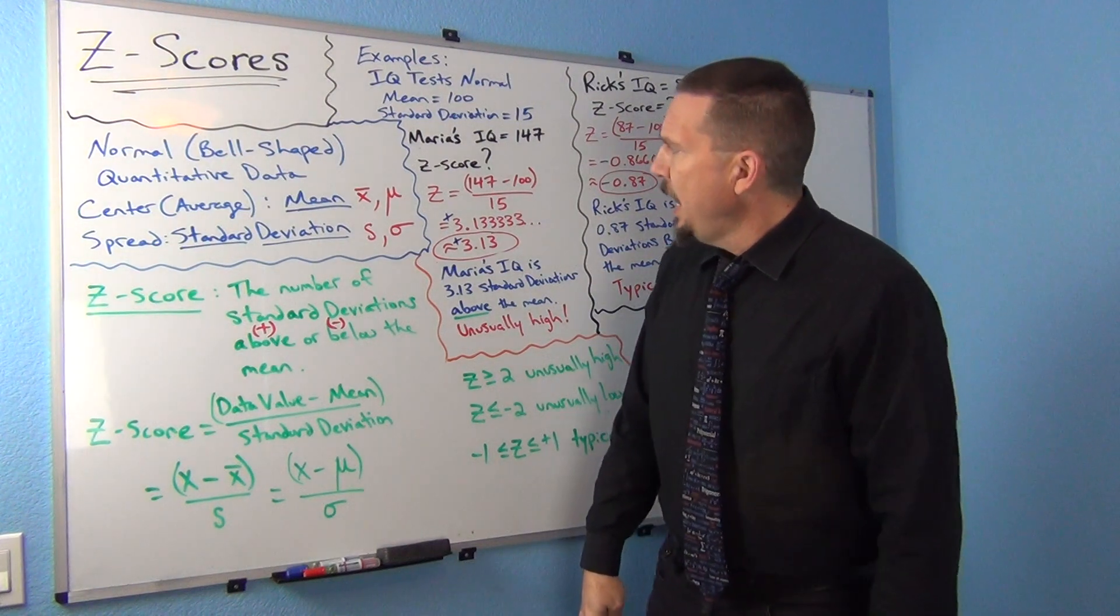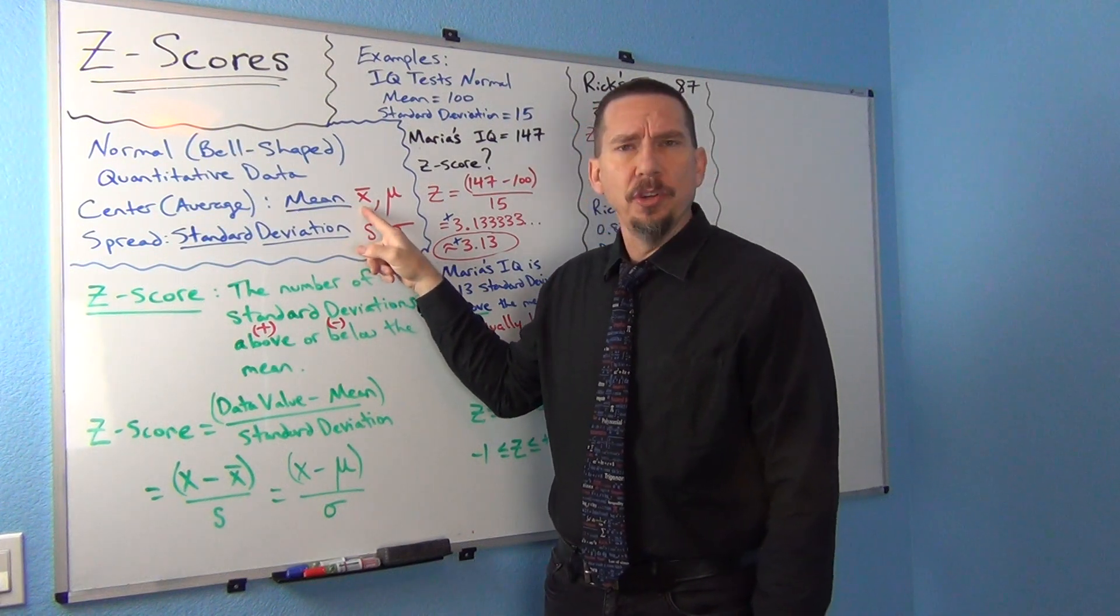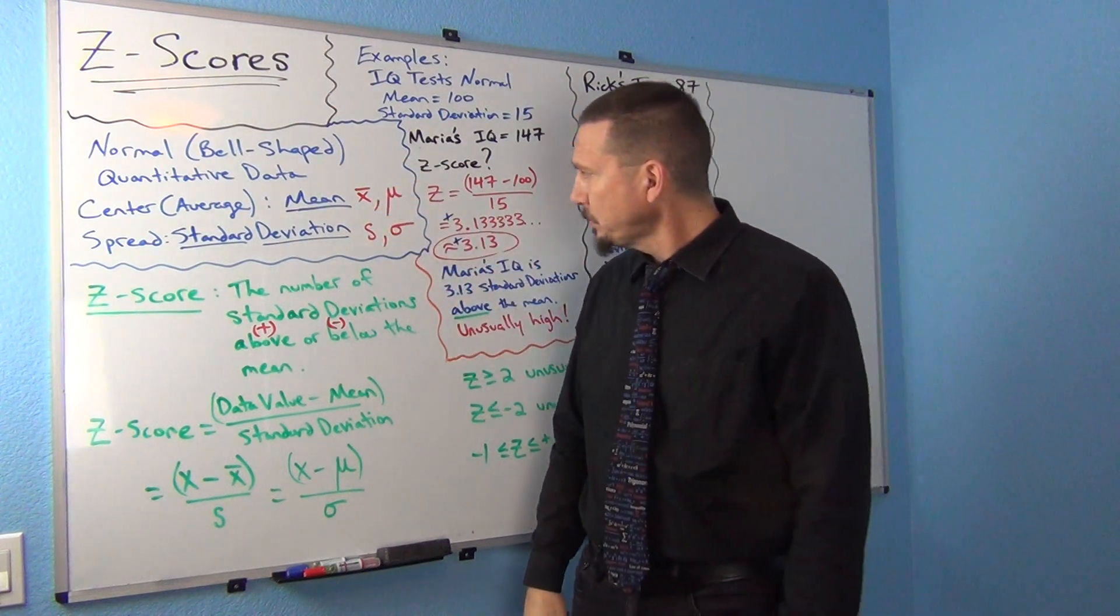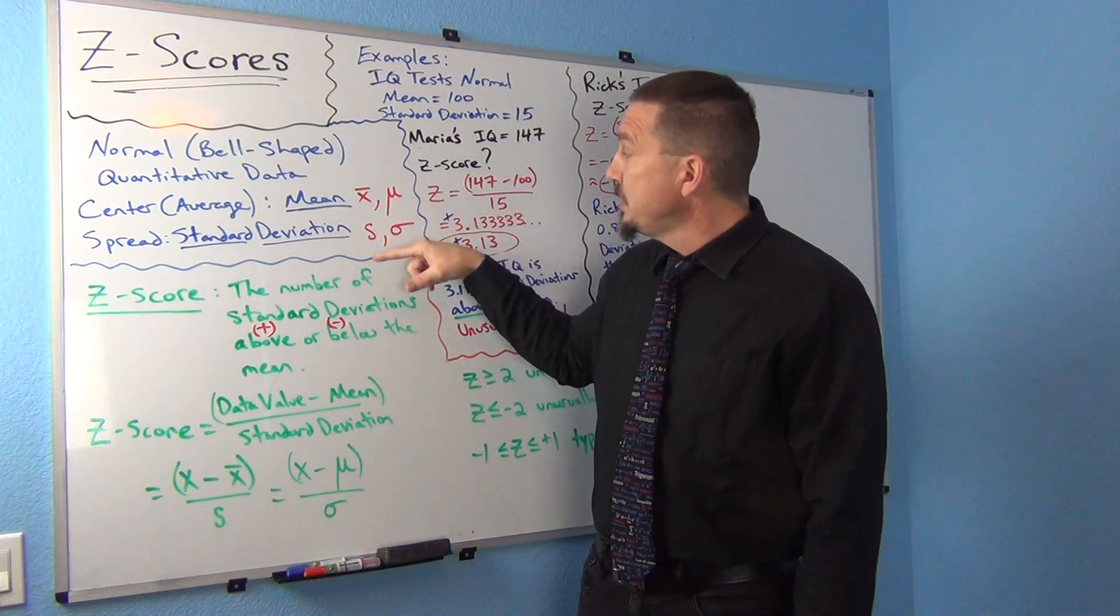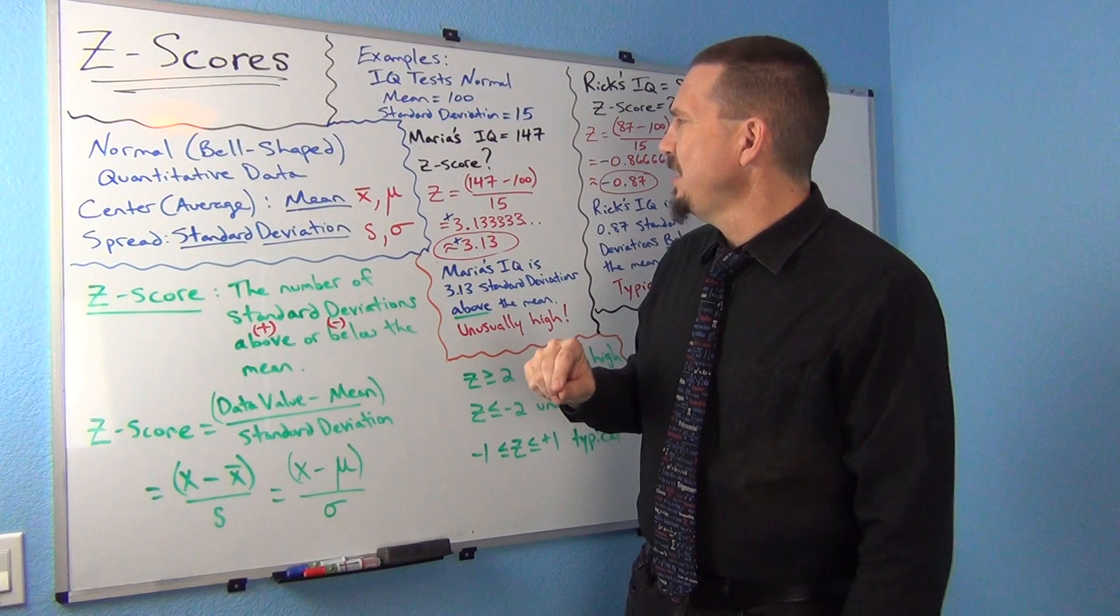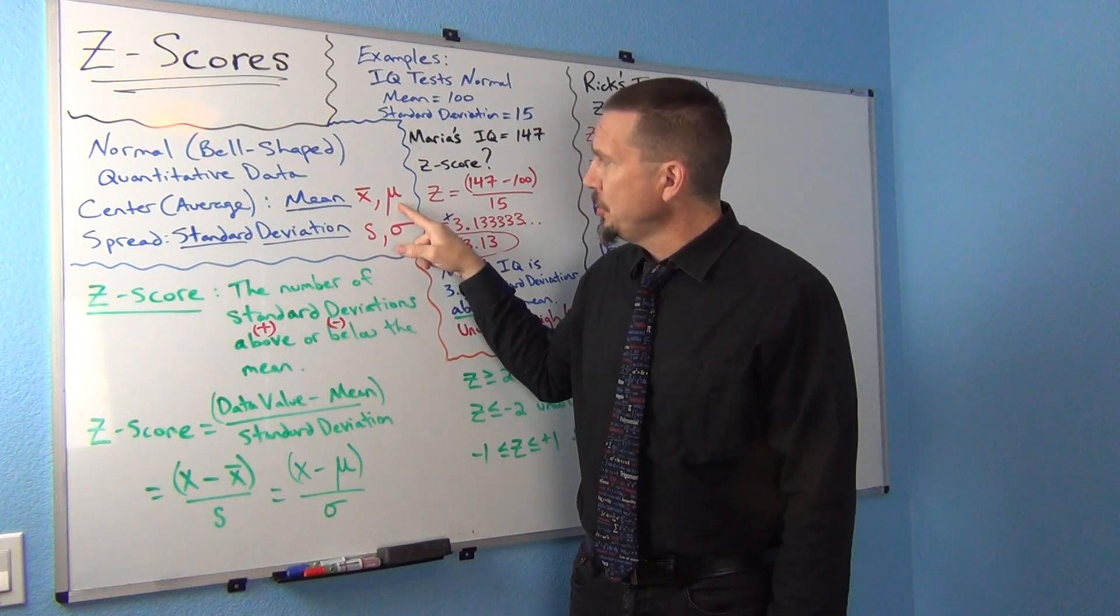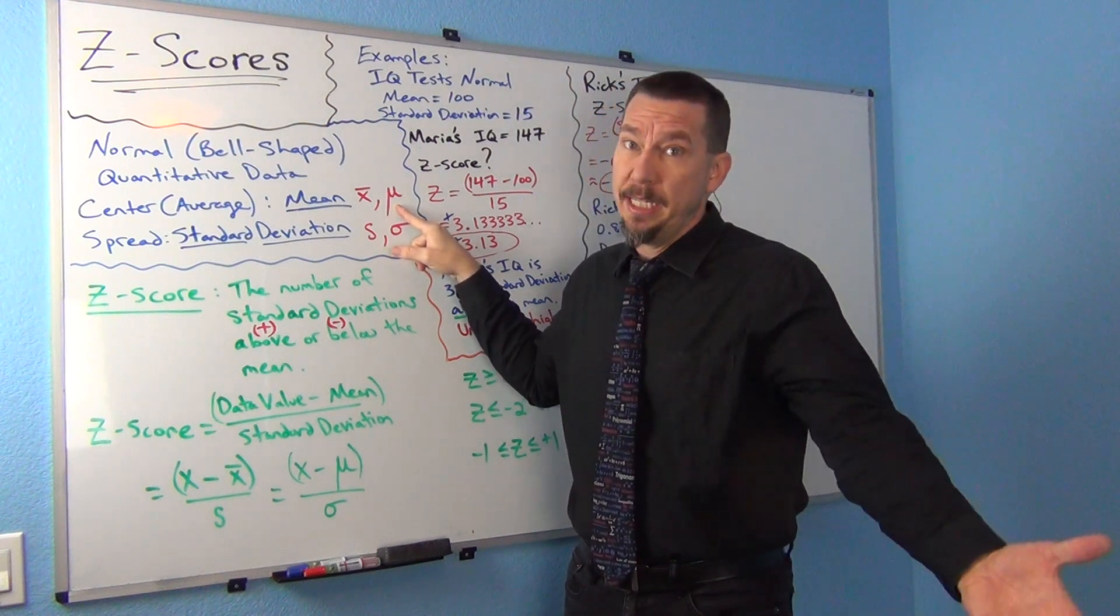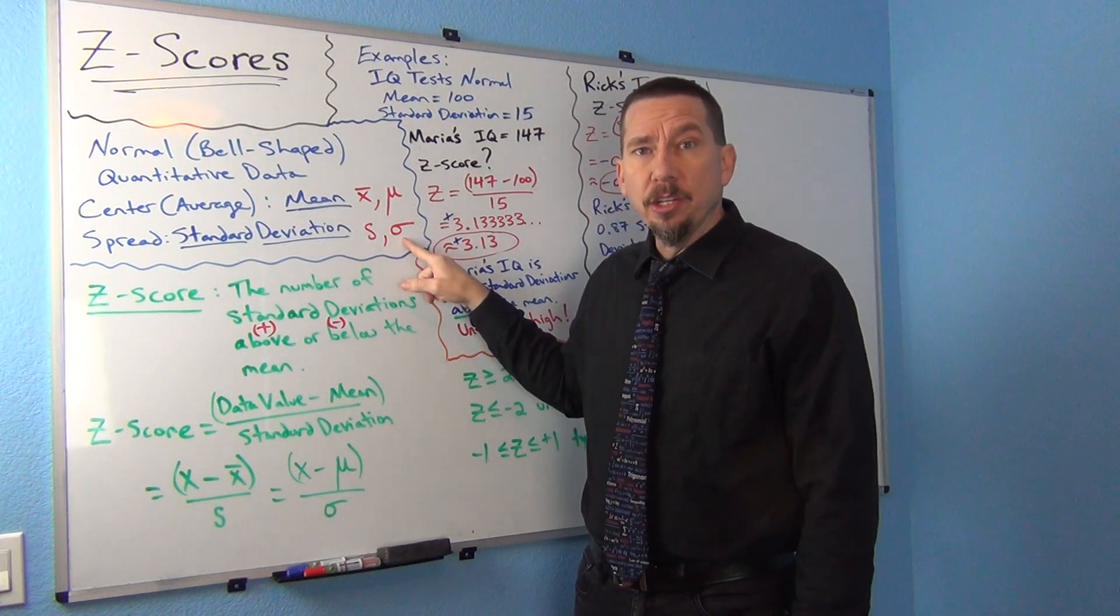Just a couple things. We saw last time that the mean of a data set is often denoted as an X with a bar over it. That symbol usually means the mean of a sample data set. Also we saw that the standard deviation is S, or the sample standard deviation. Occasionally though you will see, and we'll get more into this in the next unit, other letters. This letter right here that looks like a U with a tail is the Greek letter Mu, and it's often denoted as a population mean, if you knew the population mean average.